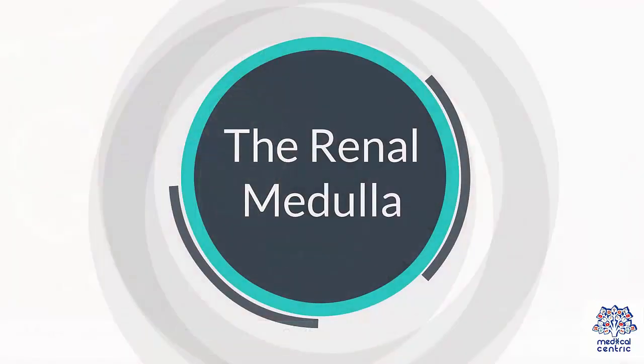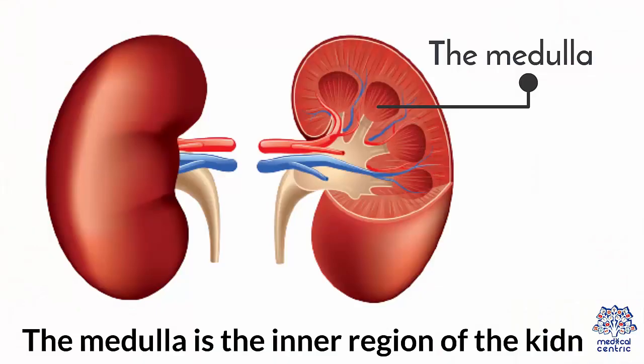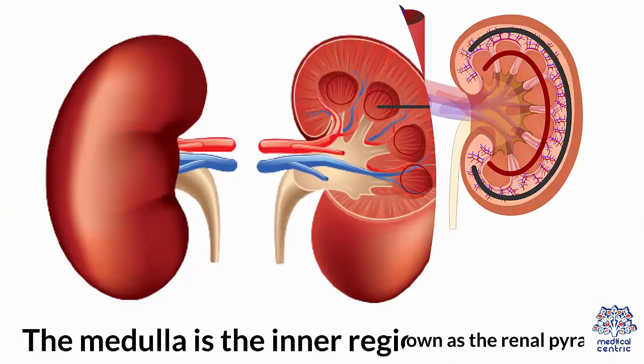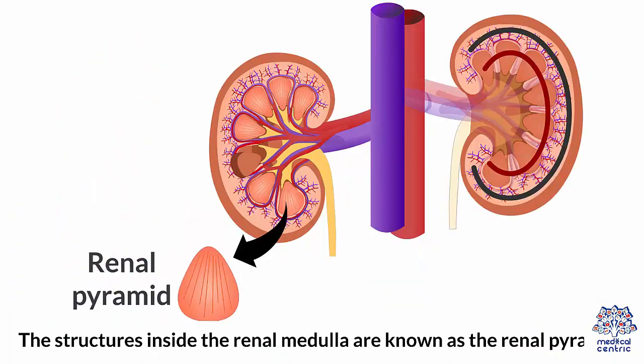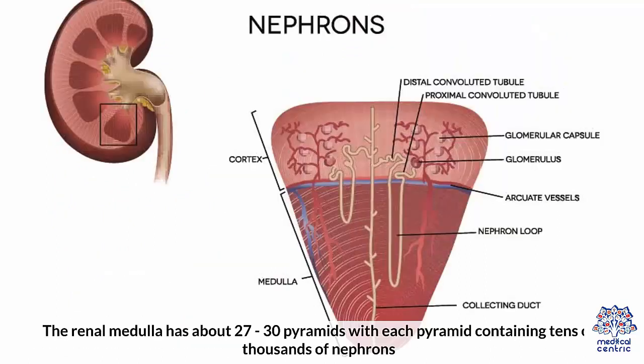The renal medulla is the inner region of the kidney. The structures inside the renal medulla are known as the renal pyramids. The renal medulla has about 27 to 30 pyramids, with each pyramid containing tens of thousands of nephrons.